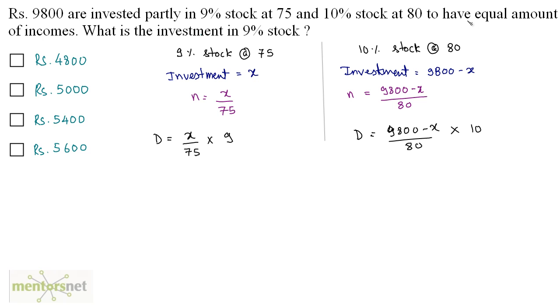Now it is said that the income from both of these various stocks should be same, that is the amount of income should be equal. So I can equate these. So I have 9 by 75 times X equals 10 by 80 times 9,800 minus X.